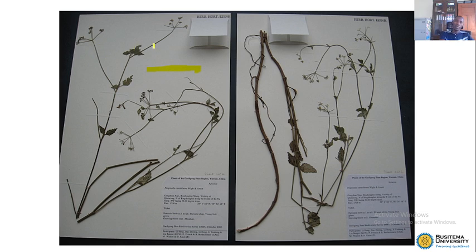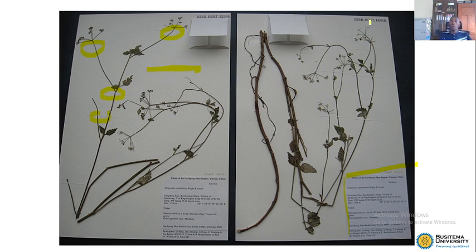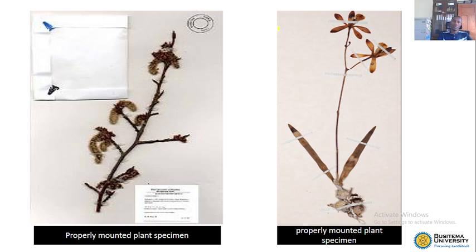Make sure that every feature you want to be seen is displayed properly on the herbarium sheet. After displaying, you can use cello tape to attach those particular parts, as we are seeing here. The tape should be transparent. After attaching, make sure you label using the right-hand corner — write your name and details about the plant, the location, and everything. You can also use a corner to make what is called a seed pocket, in case your plant had some seeds.